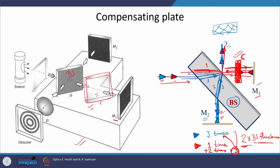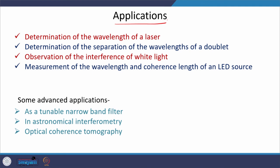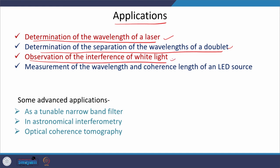Here is a summary of the applications of the Michelson interferometer: determining the wavelength of laser light; determining the separation of wavelengths in a doublet; observing white light interference; and measuring the wavelength and coherence length of LED sources. I will talk about coherence in the next module in detail. Coherence length is the length over which light remains coherent during propagation.